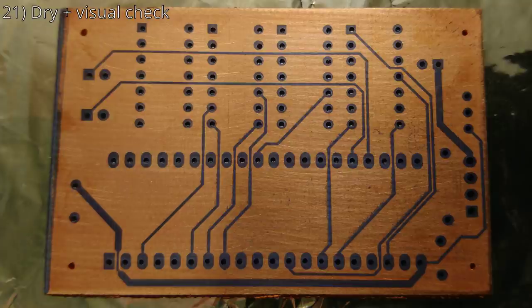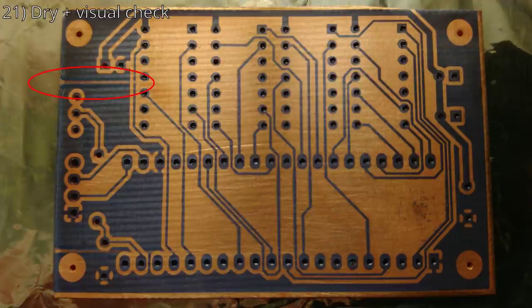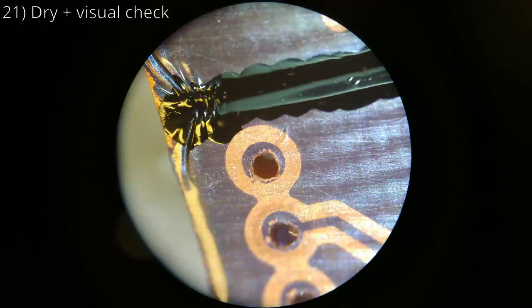If the photoresist was not applied perfectly, it may form wrinkles during the hot lamination process, resulting in exposed copper. This can be fixed, to some extent, with a permanent ink marker.